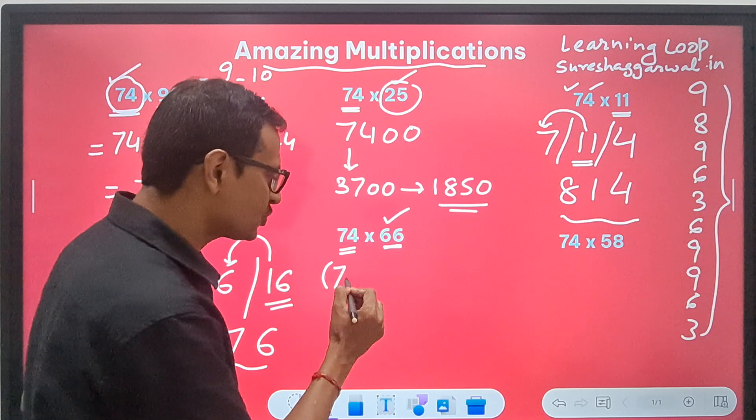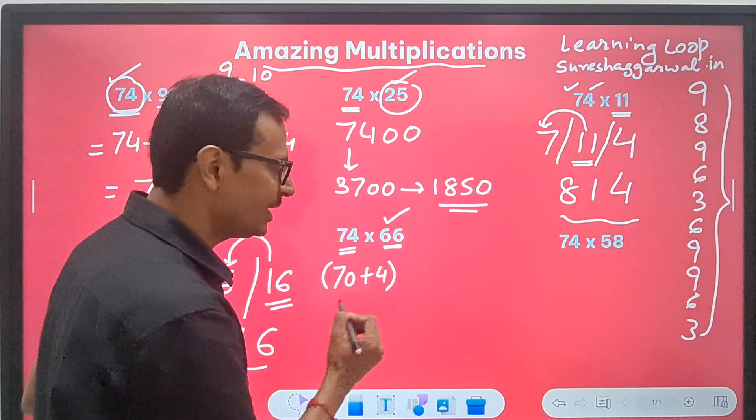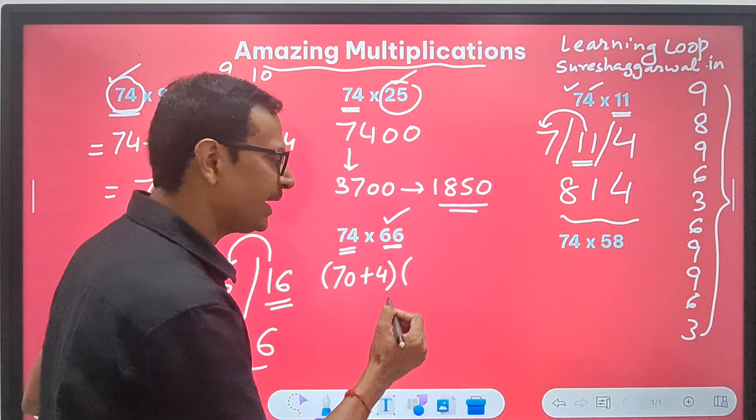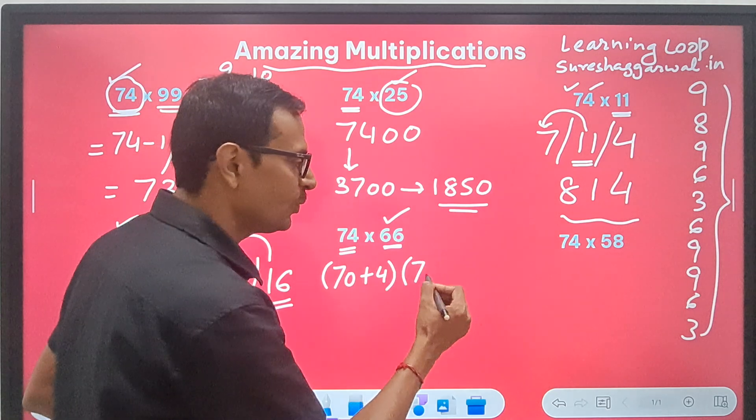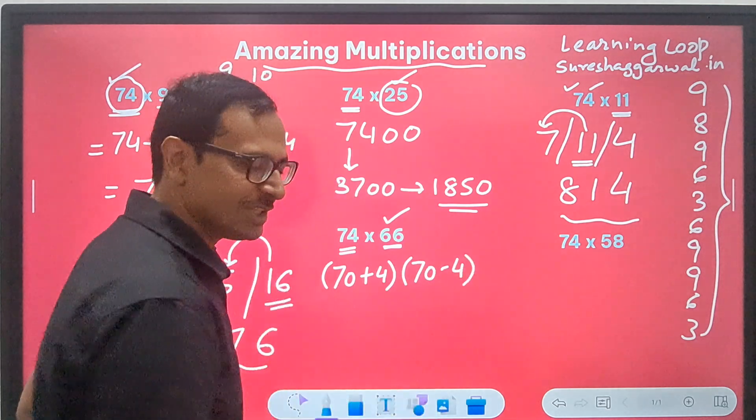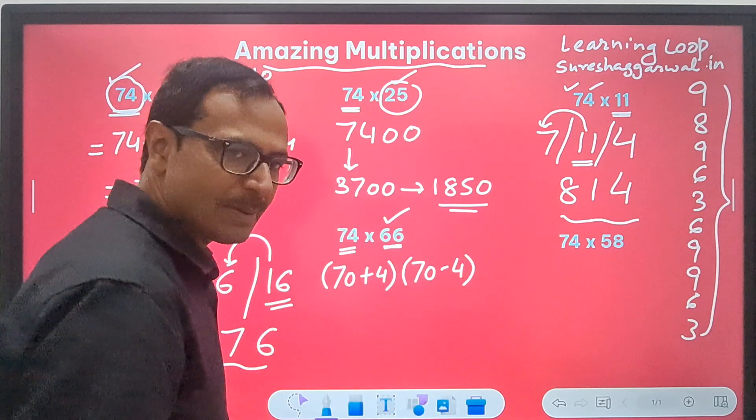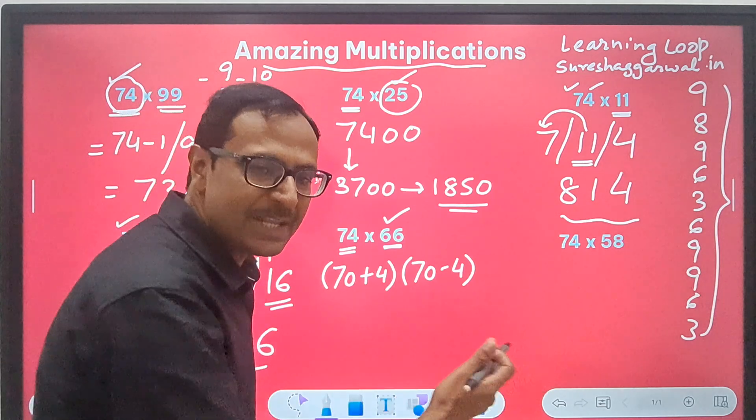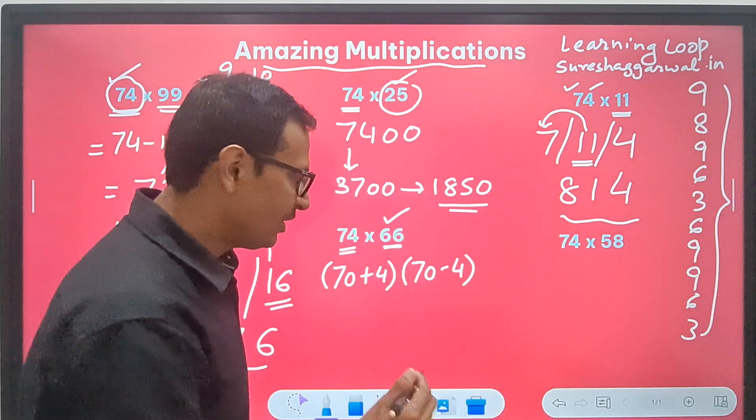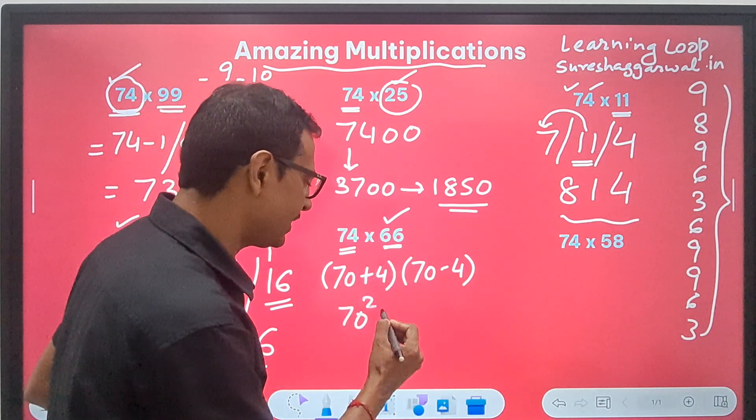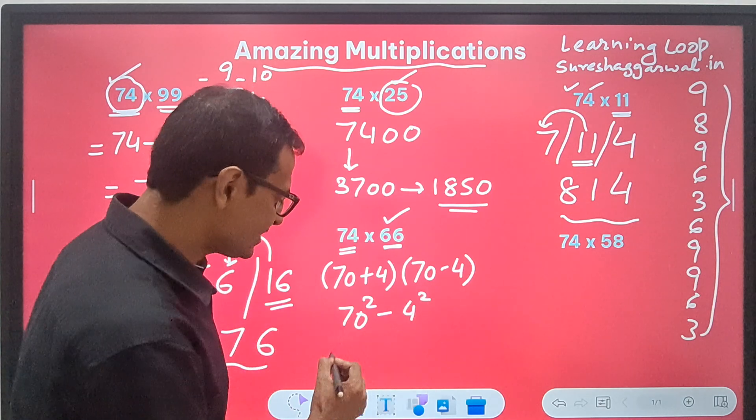74 is actually 4 more than 70. And we are multiplying it by 66 which is 4 less than 70. And whenever this type of question comes, we can use another identity a plus b, a minus b which is a square minus b square. Pretty easy. After that, 4900 minus 16.